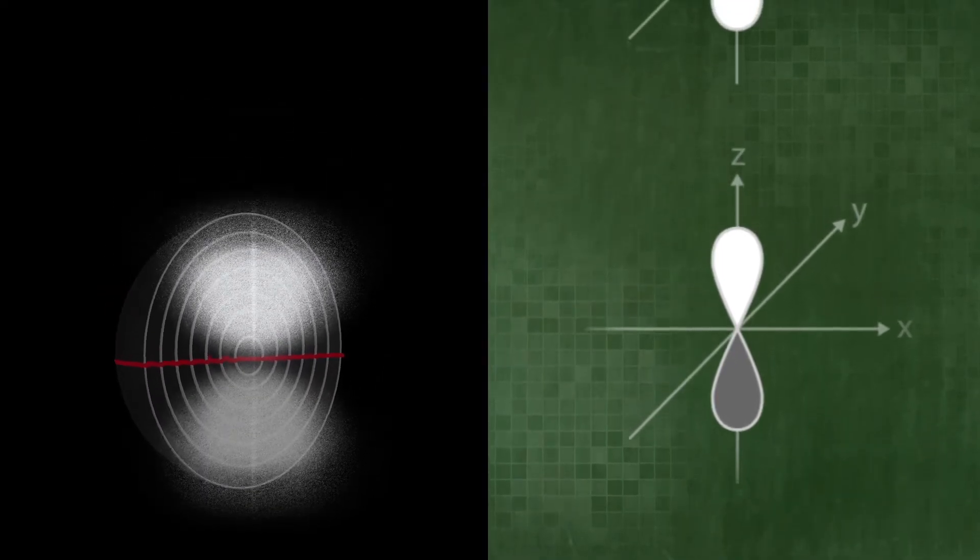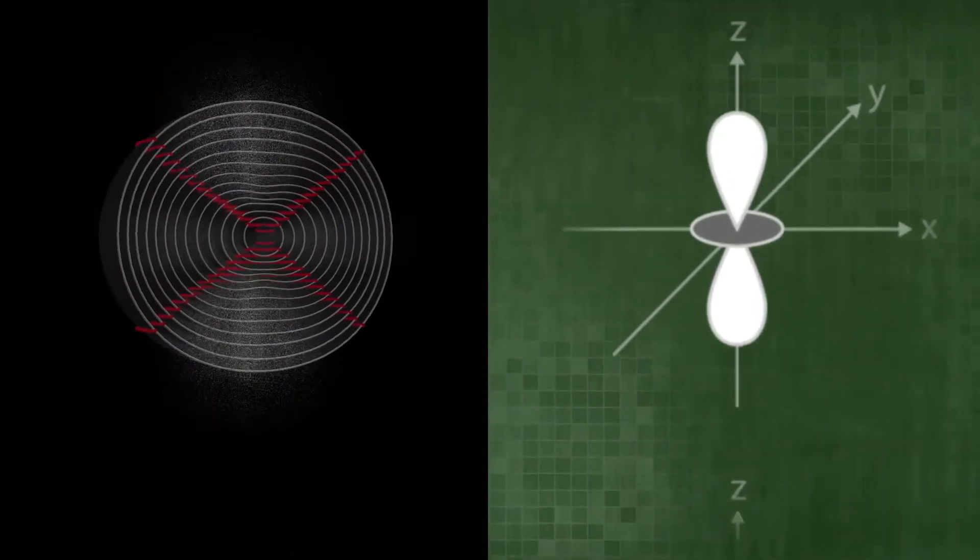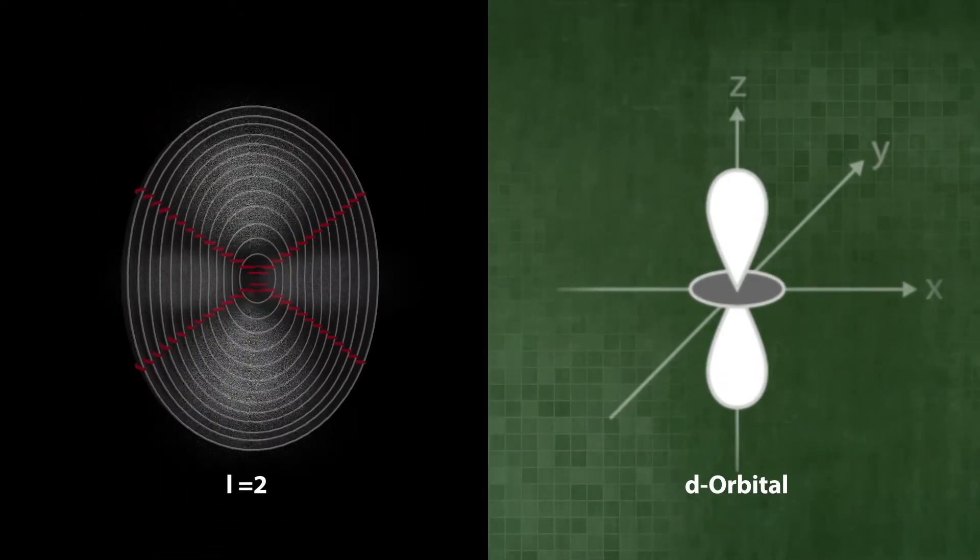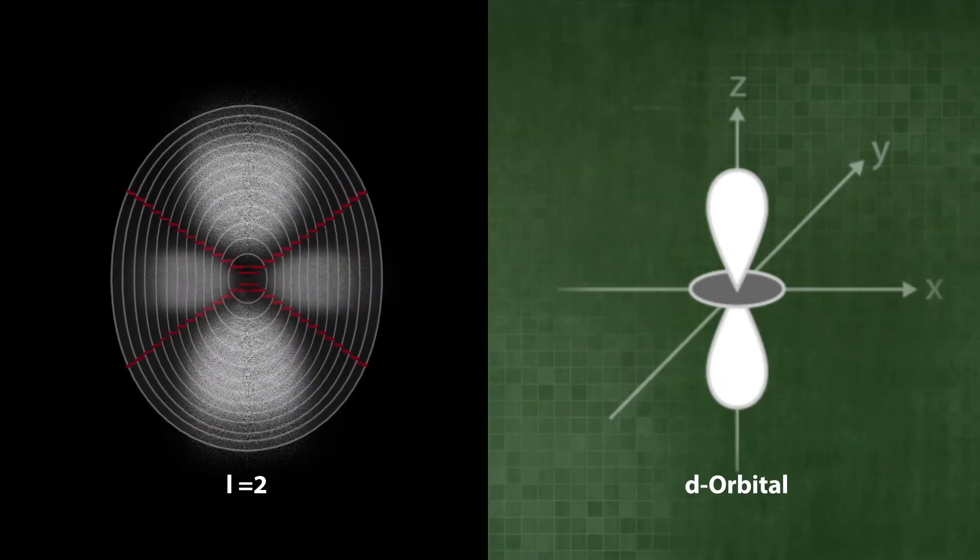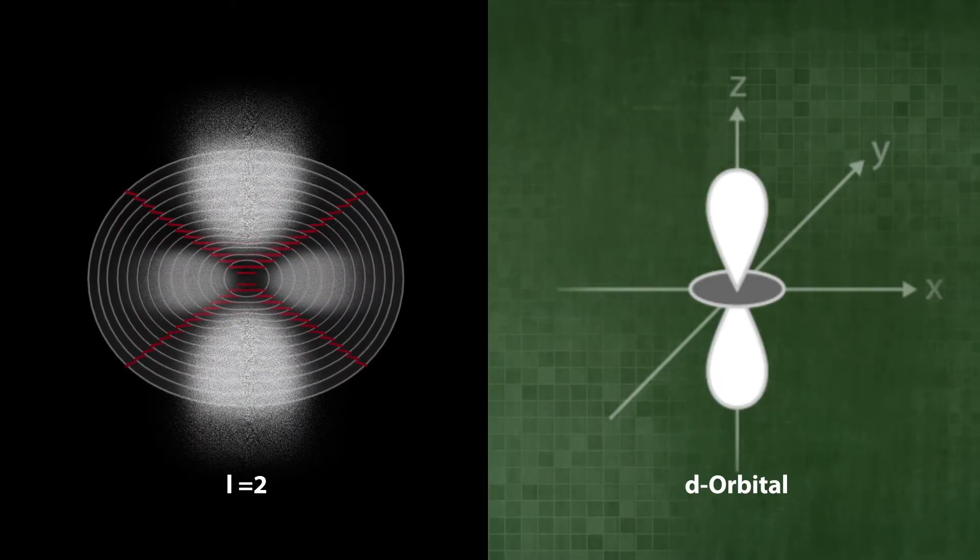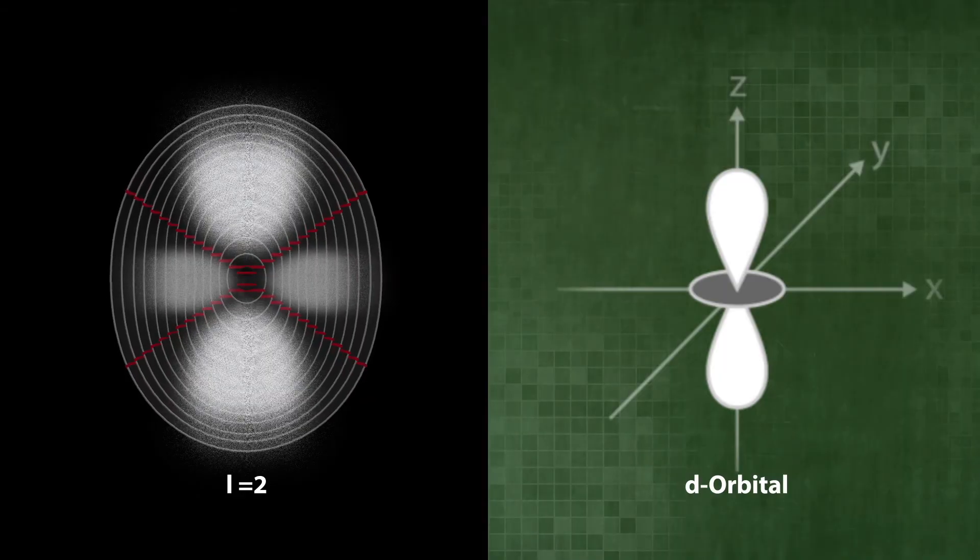This also applies to all other orbitals. Atomic orbitals in space inherit the nodal lines, or nodal surfaces, from the quantum dimension. Thus chemistry and physics go hand in hand.